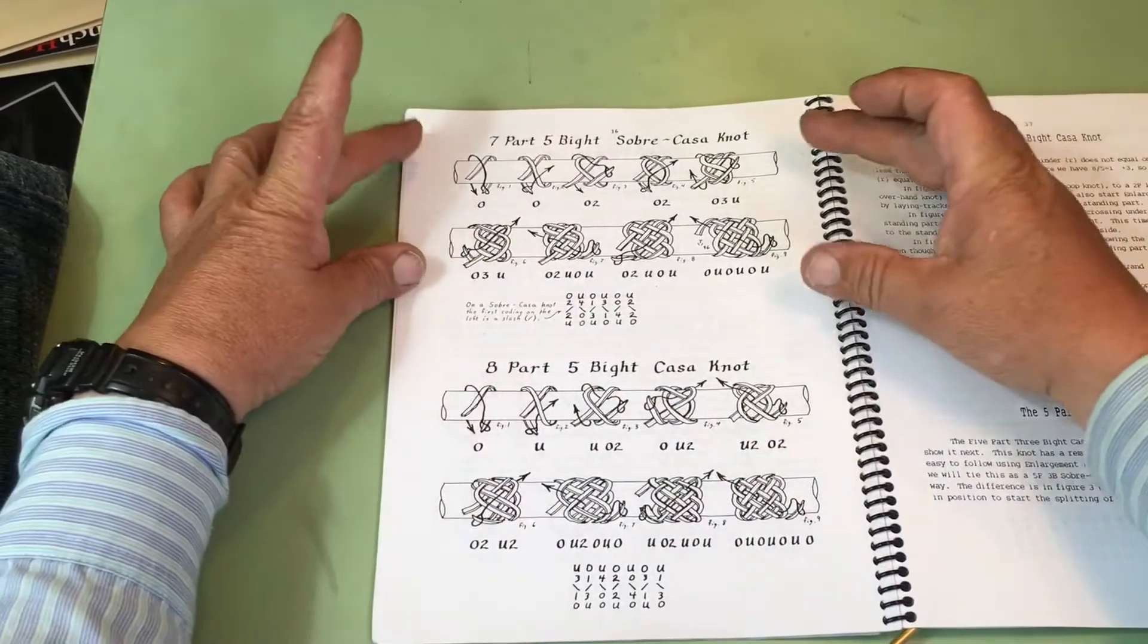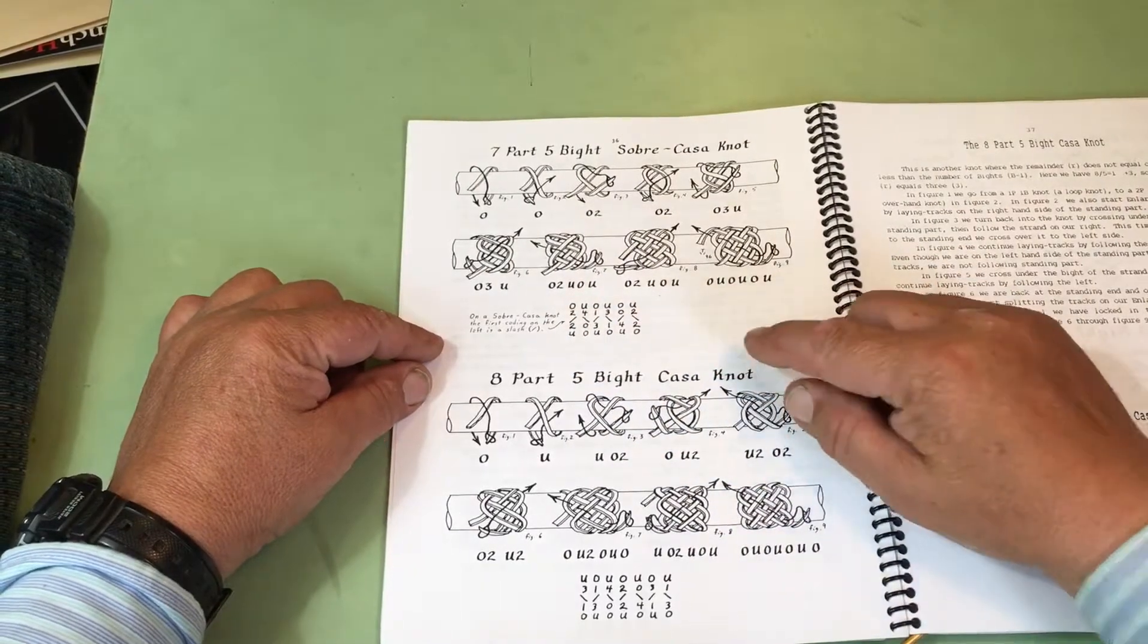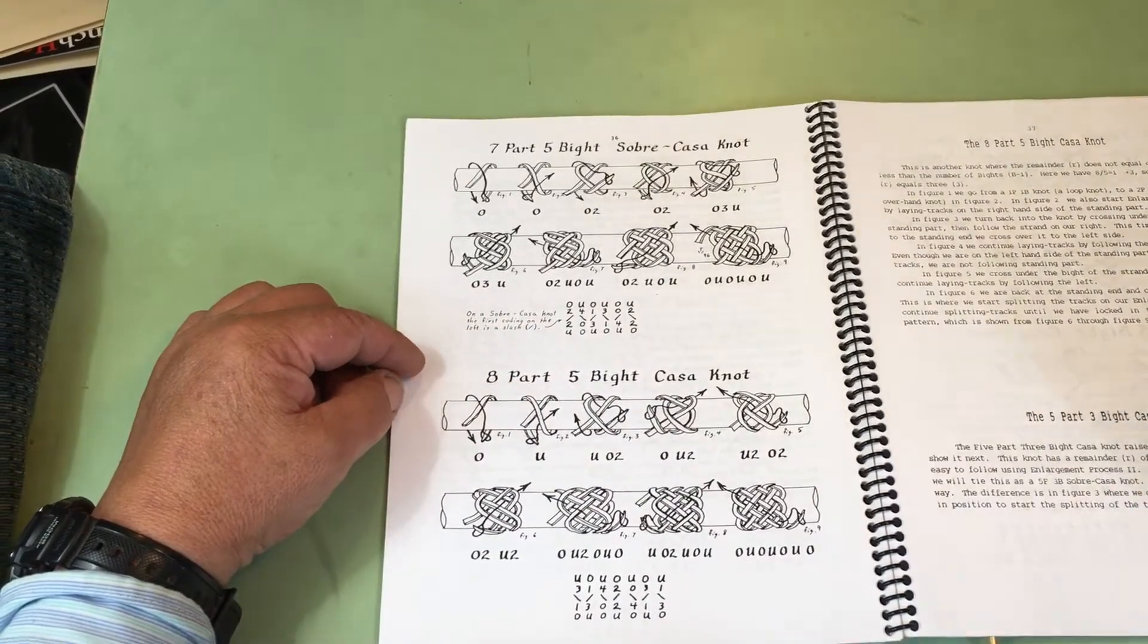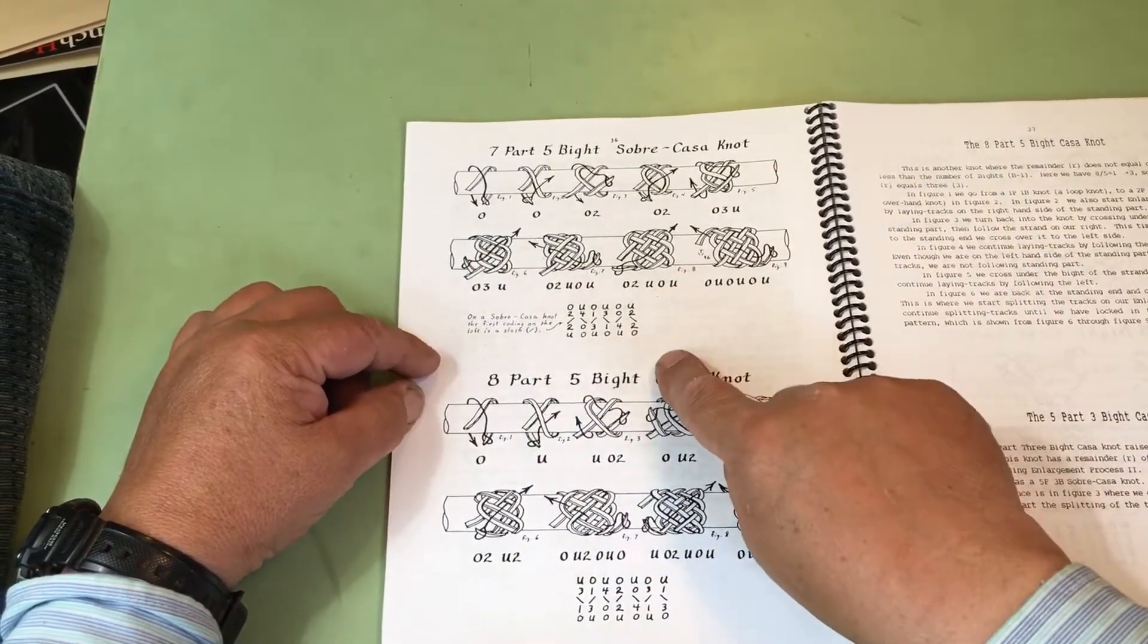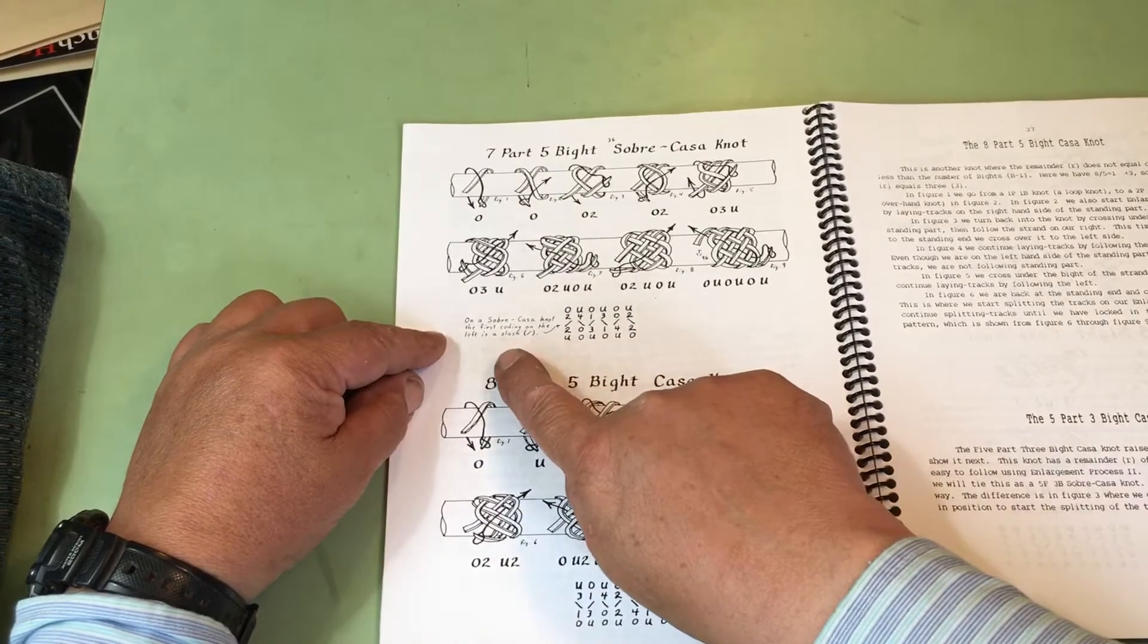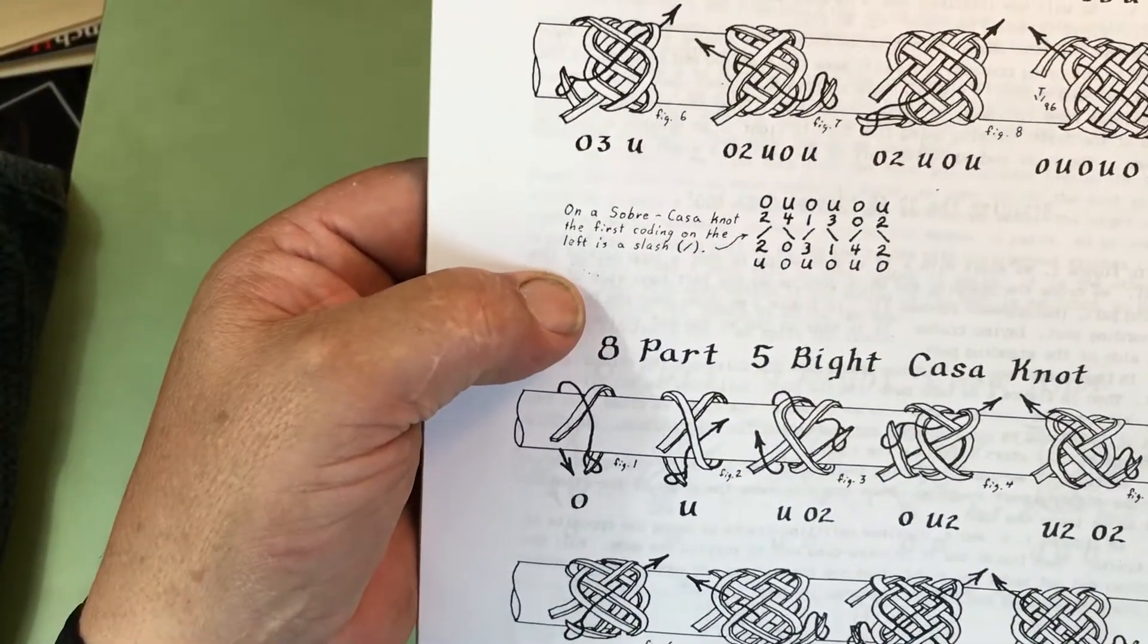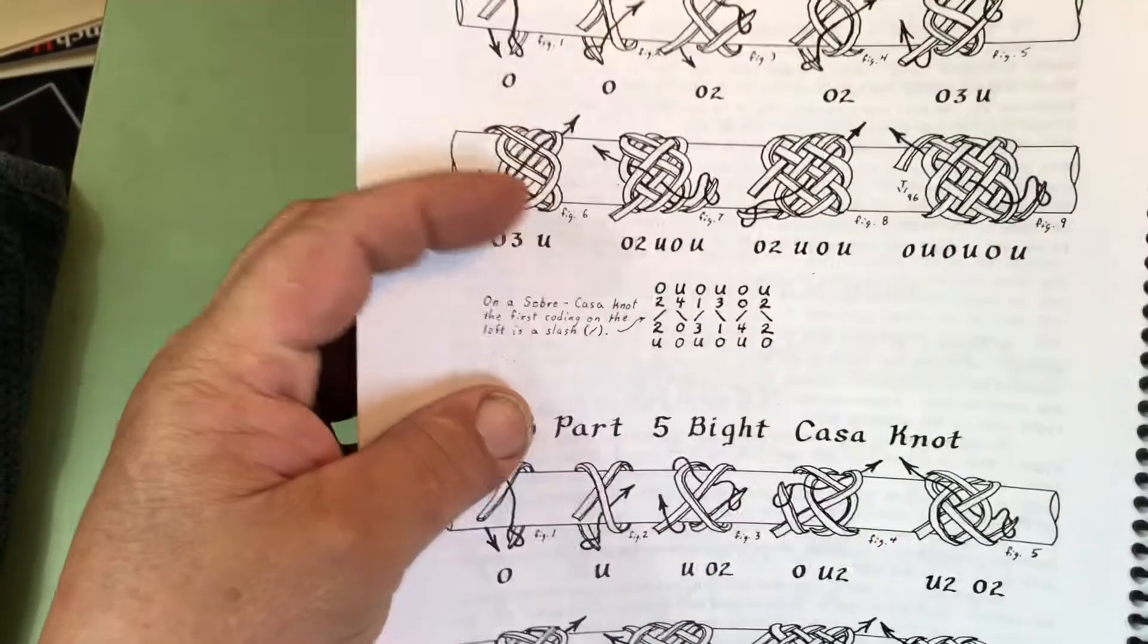in the book, I'll have a drawing of how to tie a knot, and underneath it, I'll have wrote out the algorithm diagram. So, if you're having trouble calculating it or something, or just want to use the algorithm to tie the knot, it is wrote here. And as you can see on this one, it has a note that shows that this is a Sobre. On a Sobre Casa Knot, the first coating on the left is a slash going that direction.